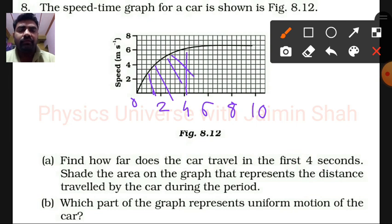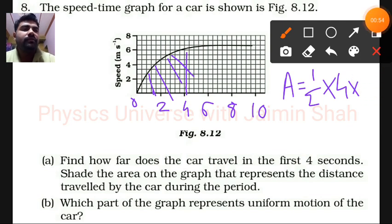speed-time graph. From a speed-time graph, if we want to find distance, then we can find the area. So area of this graph is half into - the base is 4 and the height is 6, right? So here